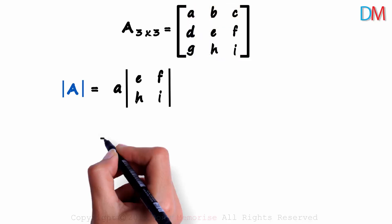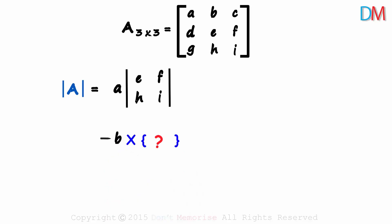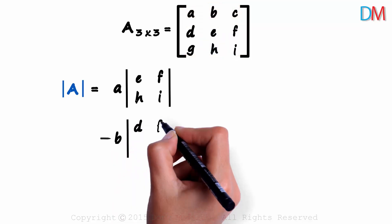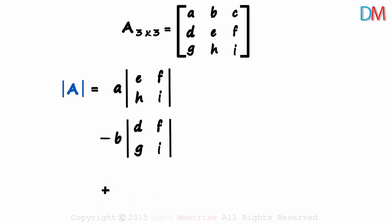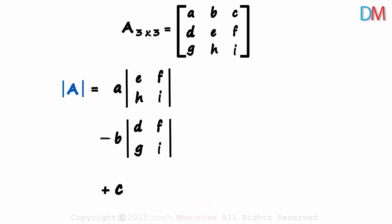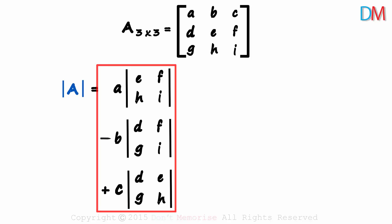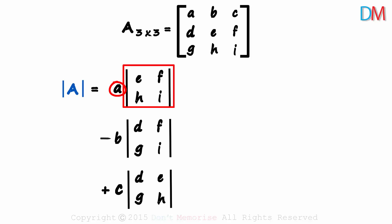It's not over yet. Then we subtract the product of B with something. B is present in the first row and the second column. After excluding them, four elements remain, and we multiply B with the determinant of D, F, G, I. To this, we add the product of C with something. We exclude the first row and the third column, and the four remaining elements give us the determinant of D, E, G, H. So the formula is: A times this determinant, minus B times this determinant, plus C times this determinant.